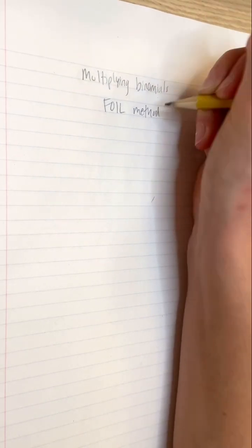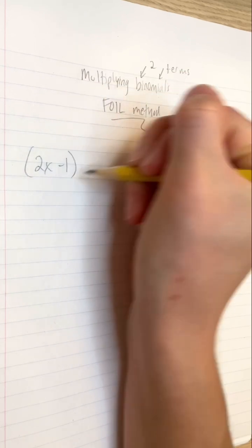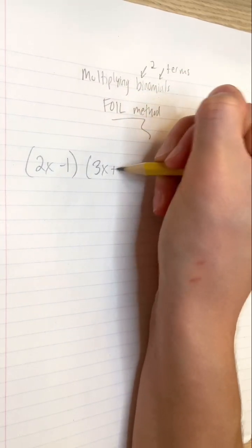First of all, the prefix bi means 2, and in math the suffix nomial refers to terms, such as numbers or variables. Binomials are math expressions that have two terms that are being added or subtracted.